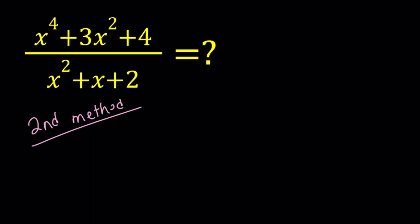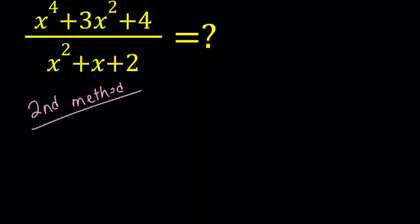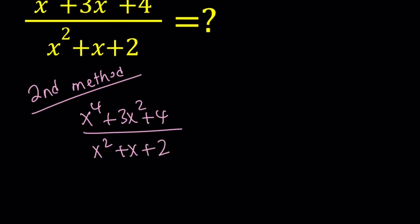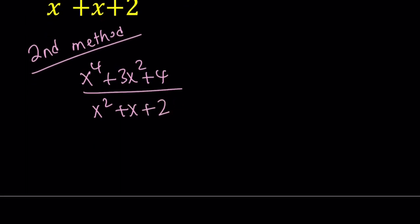So for my second method, I'm just going to set this expression. Obviously, I expect to get a polynomial from here, so that means the top is divisible by the bottom evenly with no remainder. So look at the top. It's a quartic divided by a quadratic, and they're both monic, which means the leading coefficient is 1.